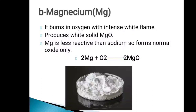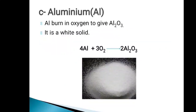The chemical equation is: Mg reacts with O2 to give MgO. MgO is a white solid — that is magnesium oxide.